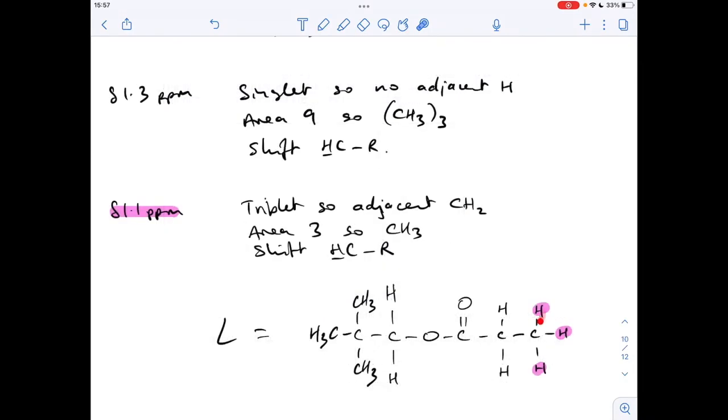So all that's doing really is confirming the presence of this CH3 group. I've sort of tied them in with the highlighter pen. So we've got 3 hydrogens in the environment, area 3, adjacent to a CH2 because of the triplet that we're seeing, and these are indeed in the H to C to R environment. So we've got the structure of L completely sorted.